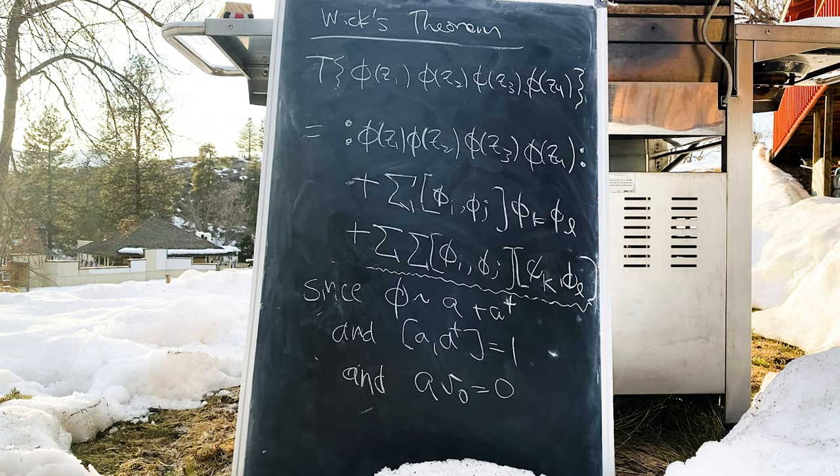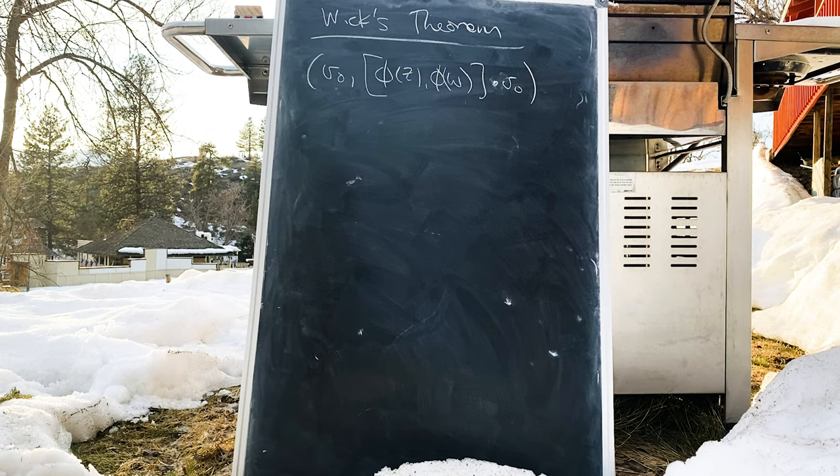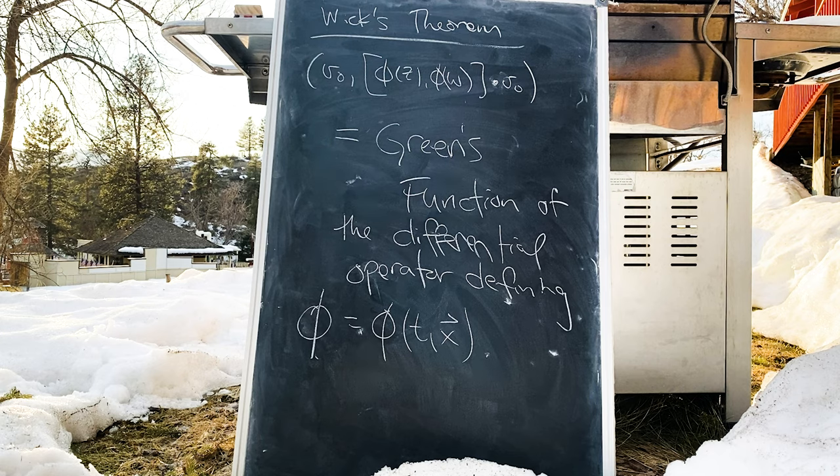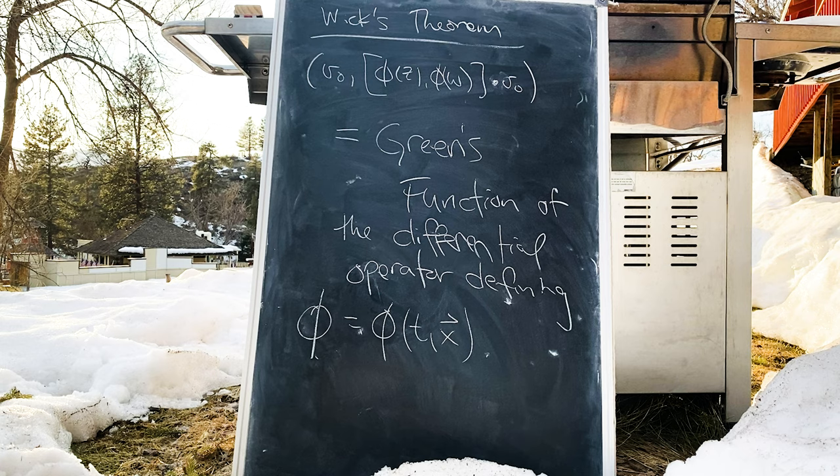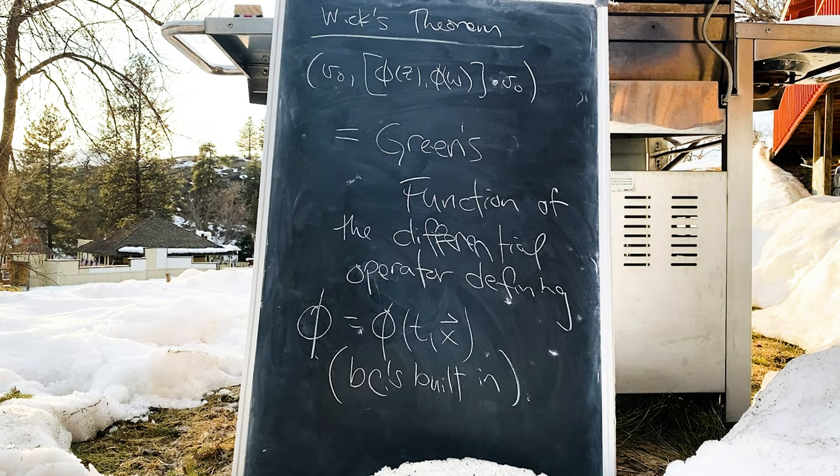And now here's the kind of amazing bit. The inner product of the vacuum vector with the commutator of two fields, say, phi of z and phi of w acting on the vacuum, is precisely the Green's function that encodes the physically relevant boundary conditions for the quantum field wave functions. Those things we use as formal variables in the formal series phi of z. Thus, the general time ordered product of operators gives us quantities that are proportional to the combinations of various Green's functions, which, of course, generate our physical solutions. Crazy, right?